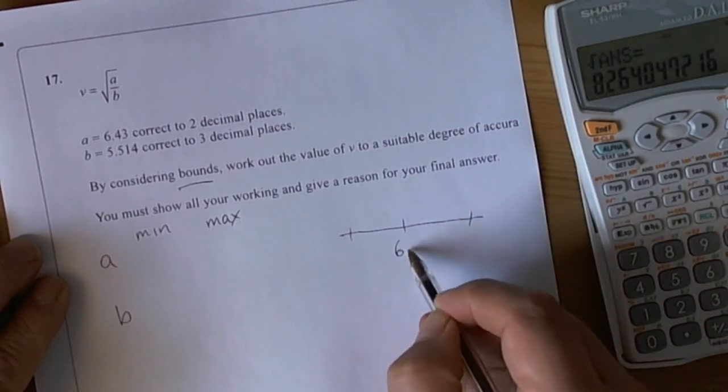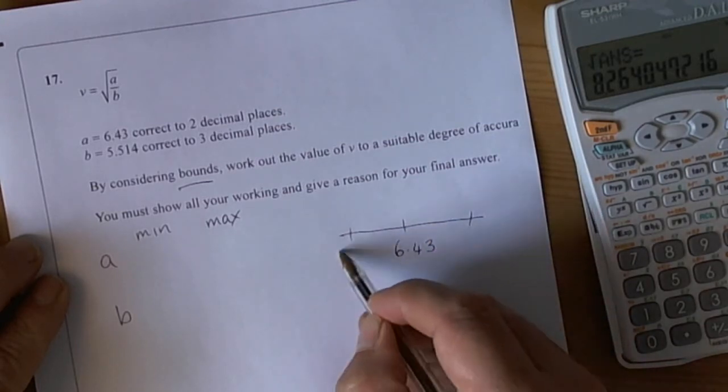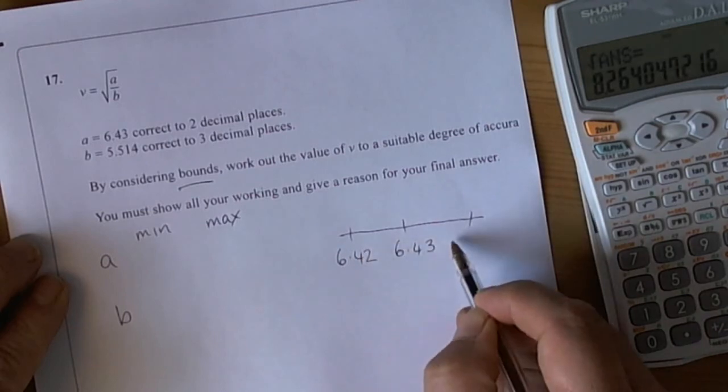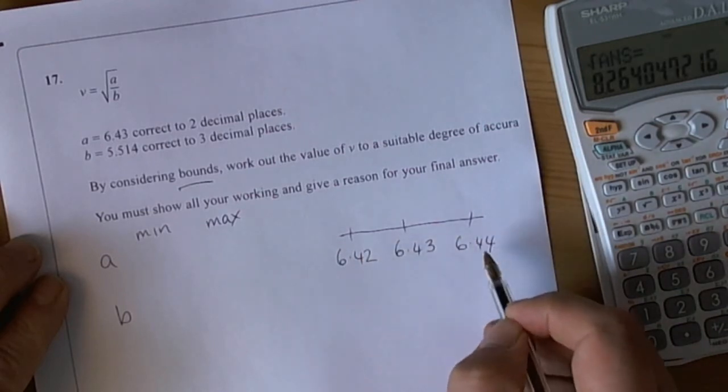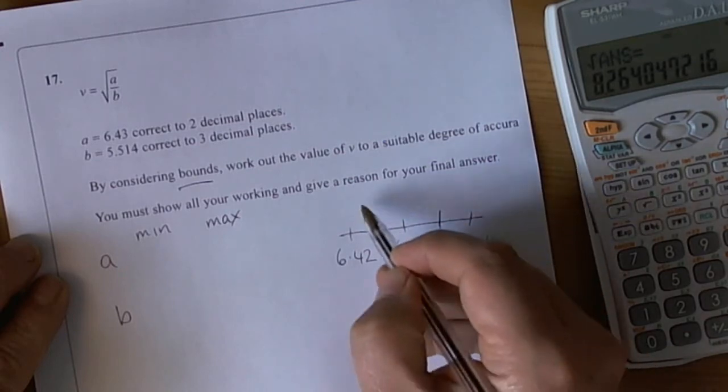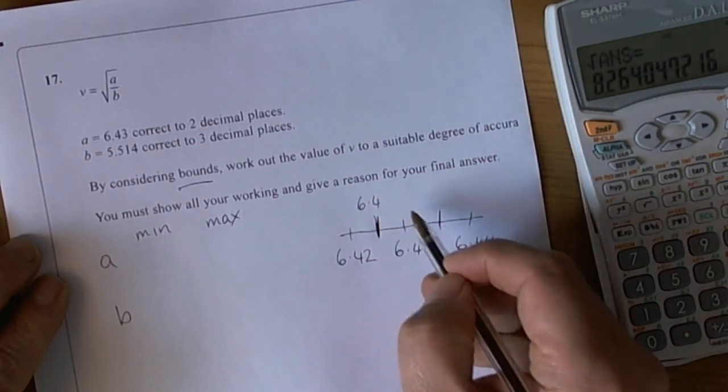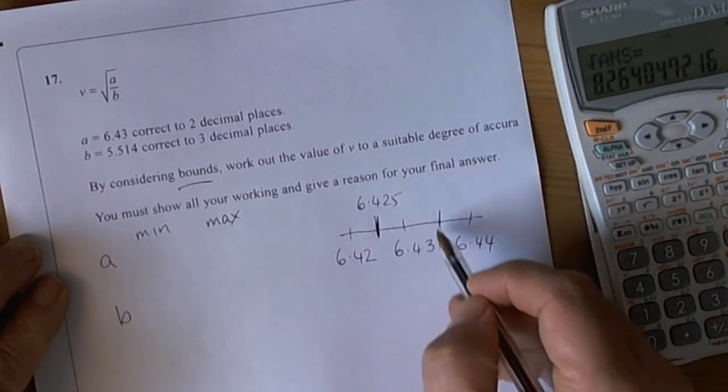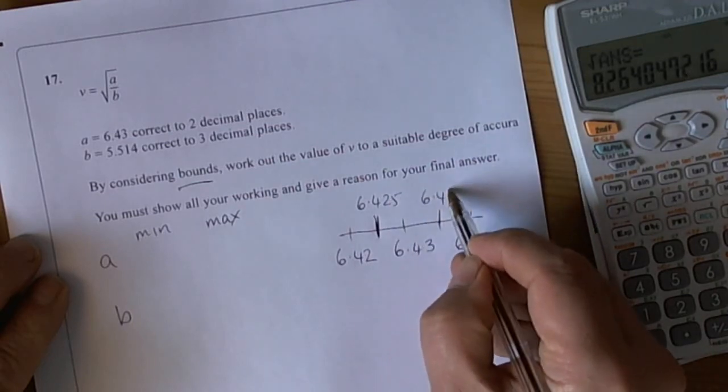That's going in 6.43, it could have been given as 6.42, it could have been given as 6.44, and it's the boundaries we want, so they're the halfway marks. So for this particular one, 6.425 and 6.435.